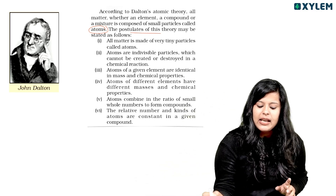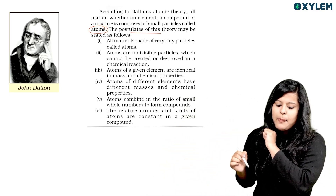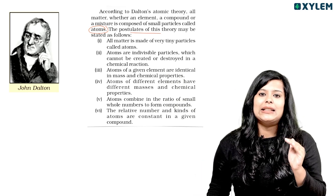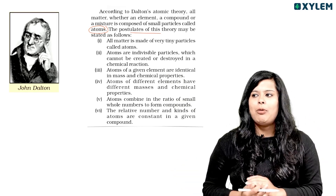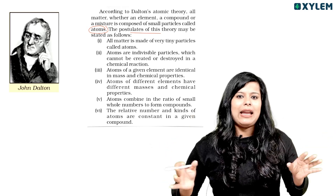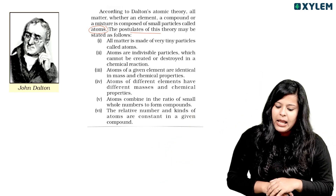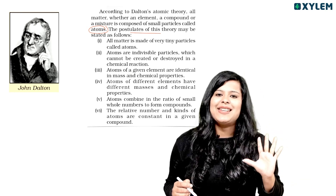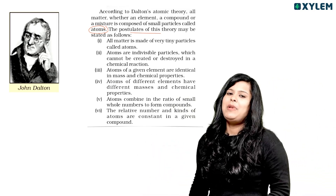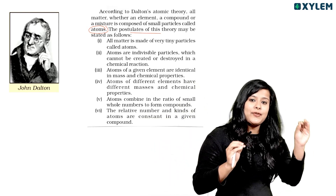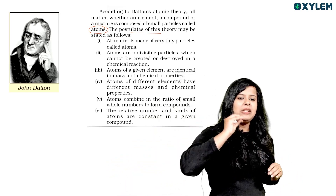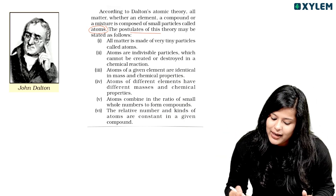Atoms of a given element are identical in mass and chemical properties. Elements are different — they are identical in mass and chemical properties within the same element. Atoms of different elements have different masses and chemical properties.